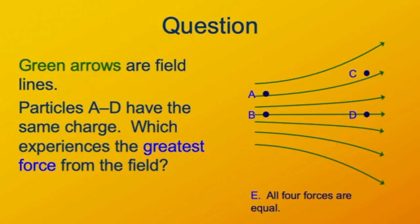Let's look at four test points A, B, C, and D in this diverging electric field. If the green arrows represent field lines, and we have particles at A, B, C, and D with the same charge, which one gives us the greatest field? Would it be A, B, C, D, or would they all be the same?